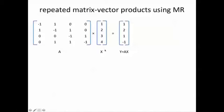When you do matrix-vector multiplication, you're taking a row and multiplying every element of this row by the corresponding element of this vector and then summing everything up. The first element of this product will be minus 1 times 1 plus 2, which will be 1. Similarly, the second element will be 1 times 1 minus 2 plus 3, which will be 2. The third element will be minus 1 times 2 plus 3, which will be 1, and the last will be minus 1 times 3 minus 4, which will be minus 1.